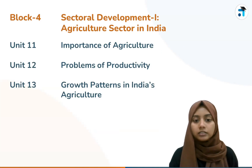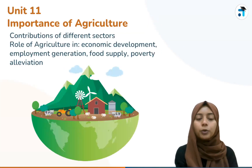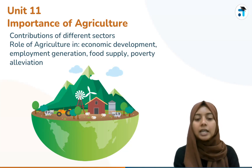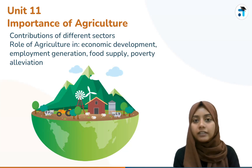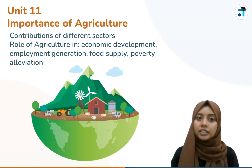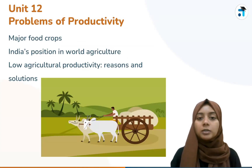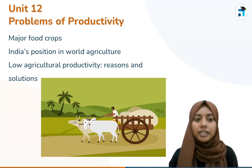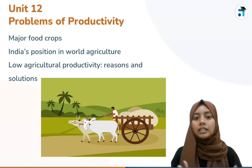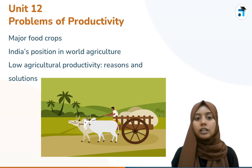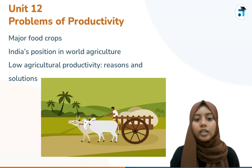In Block 4, we will discuss the agriculture sector. We cover the role of agriculture in economic development: employment generation, food supply, and poverty alleviation. Unit 12 covers problems of productivity, major food crops, India's position in world agriculture, low agricultural productivity, and growth patterns.